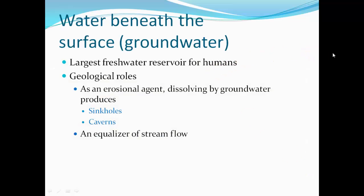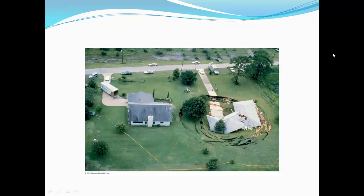Now we're going to talk about groundwater — the largest freshwater reservoir for humans. It also has geologic roles: as an erosional agent, groundwater dissolves limestone, producing sinkholes and caverns. It's also an equalizer of stream flow, as the groundwater system tends to be connected to our rivers and streams. When groundwater erodes limestone and creates a large cavern, the overlying rock and houses can eventually collapse and form a sinkhole. Here's an example of a large sinkhole eating a house.